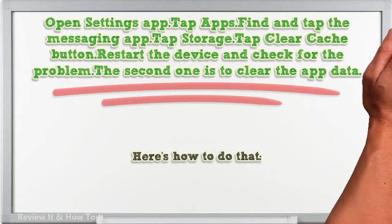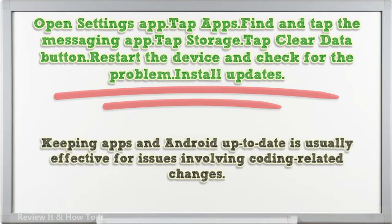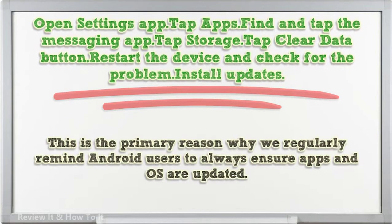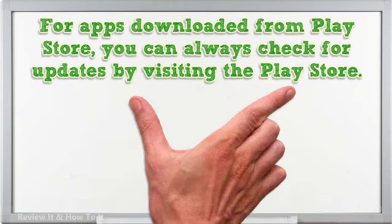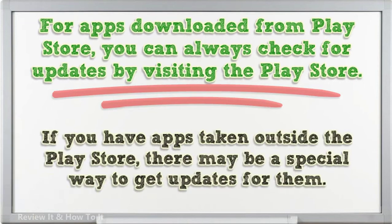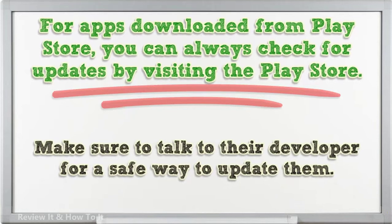Here's how to clear app data: Open Settings > Apps > find and tap the messaging app > tap Storage > tap Clear Data > restart the device and check for the problem. Install updates. Keeping apps and Android up to date is usually effective for issues involving coding-related changes. This is the primary reason why we regularly remind Android users to always ensure apps and OS are updated. For apps downloaded from Play Store, you can always check for updates by visiting the Play Store. Make sure to talk to their developer for a safe way to update apps taken outside the Play Store.